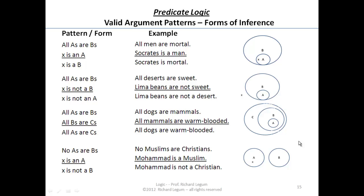These are valid forms of inference. In predicate logic we have four good ones, and when constructing arguments we probably want to use these. This does not exhaust all possible inferences, but these are the key ones and cover probably 85–90% of what we need for arguments whose logic depends on predicate logic. When reconstructing someone else's argument, it's worthwhile trying to put it in one of these forms.